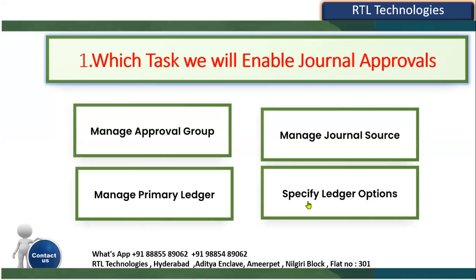Manage Approval Group is for creating groups. Manage Journal Source is for creating sources only. Manage Primary Ledger is for creating the ledger. In Specify Ledger Options, you select the ledger name and enable the checkbox saying journal approvals are required. There you can also configure intercompany transactions, document sequence numbering, and other options.